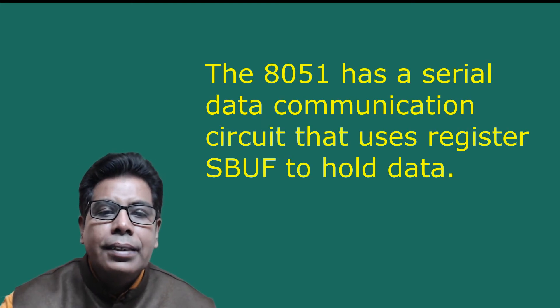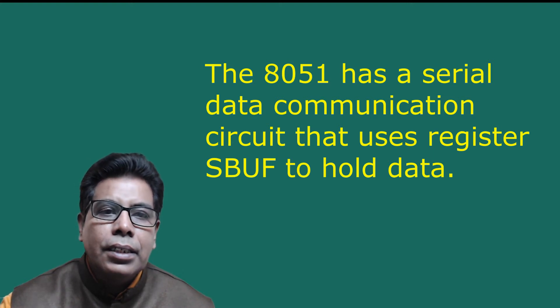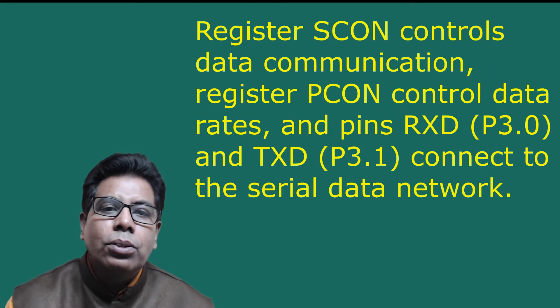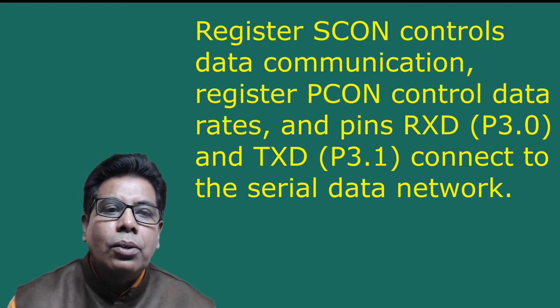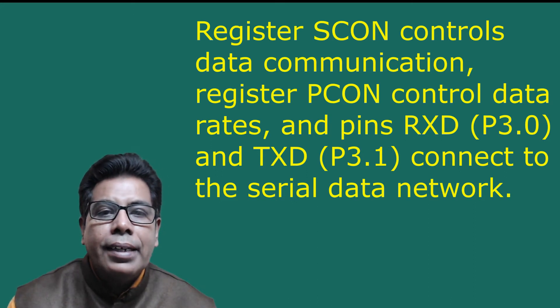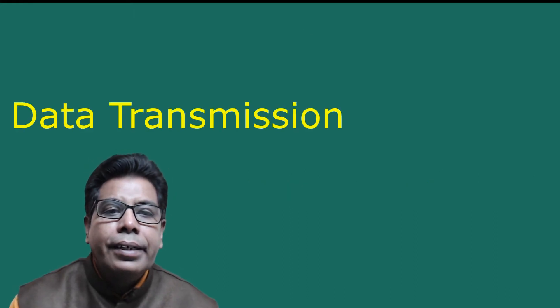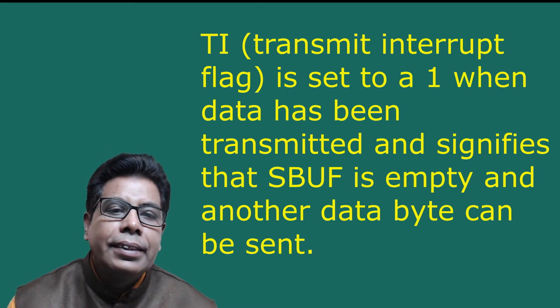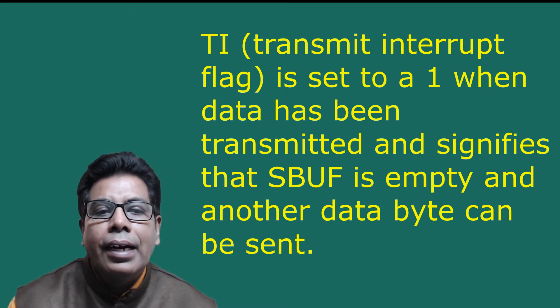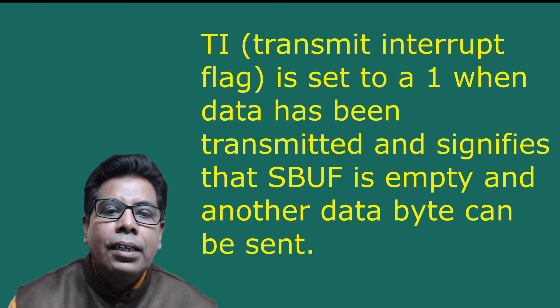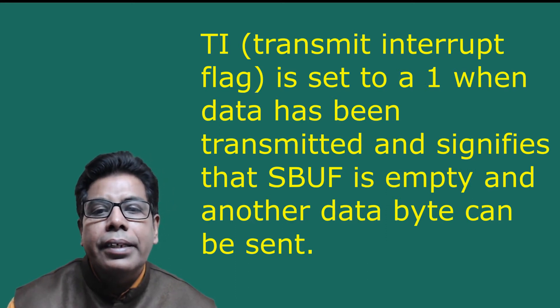The 8051 has a serial data communication circuit that uses register SBUF (serial buffer) to hold data. Register SCON controls the data communication, register PCON controls data rates, and pins RXD and TXD connect to the serial data network. Transmission of serial data bits begins anytime data is written to SBUF. The transmit interrupt flag TI is set to 1 when data has been transmitted, signifying that SBUF is empty and another data byte can be sent.